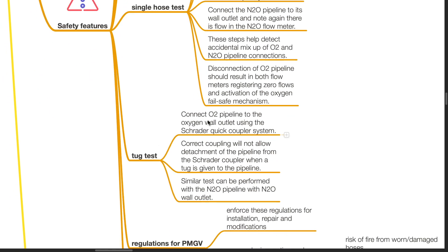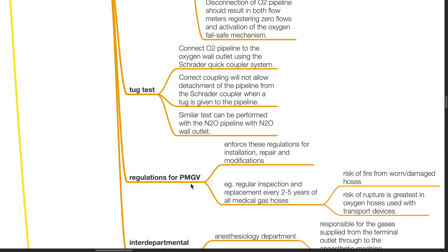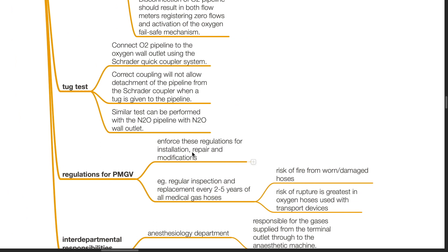Tuck test: Connect the oxygen pipeline to the oxygen wall outlet using the Schrader quick coupler system. Correct coupling will not allow detachment of the pipeline from the Schrader coupler when a tuck is given to the pipeline. Similar tests can be performed with the nitrous oxide pipeline with the nitrous oxide wall outlet. Regulations for PMGV enforce these regulations for installation, repair, and modifications. For example, regular inspection and replacement every 2-5 years of all medical gas hoses. Risk of fire from worn or damaged hoses occurs. Risk of rupture is greatest in oxygen hoses used with transport devices.